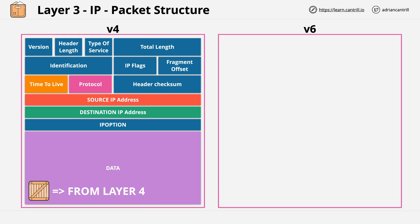In summary, a packet contains some data which it carries generally for layer 4 protocols. It has a source and destination IP address. The IP protocol implementation, which is on routers, moves packets between all of the networks from source to destination, and it's these fields which are used to perform that process.